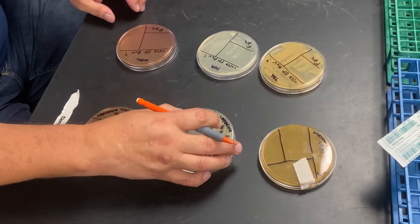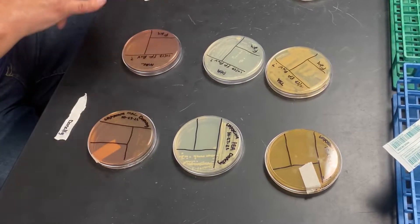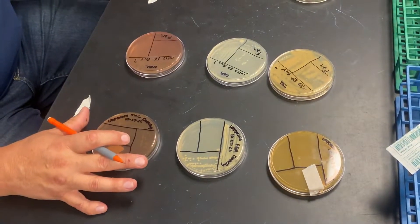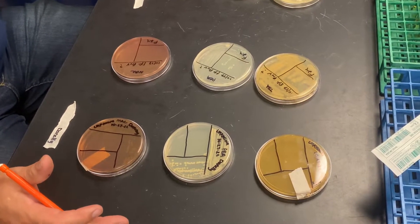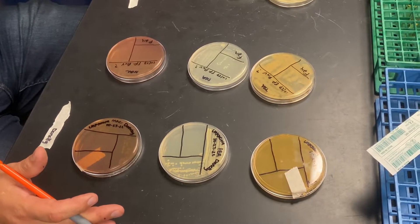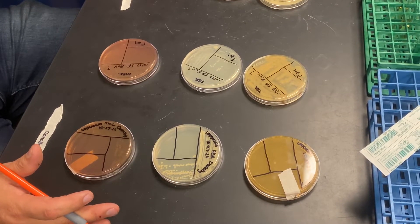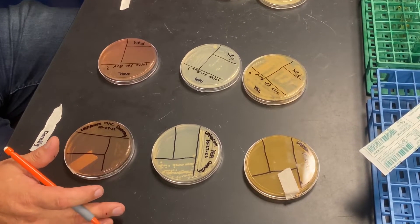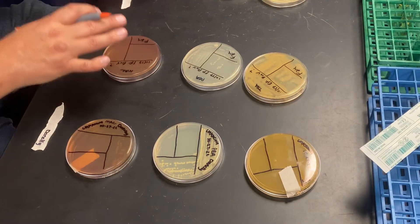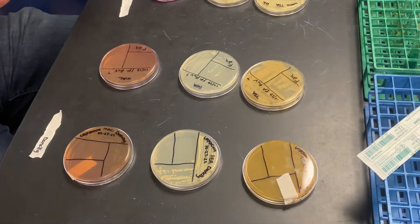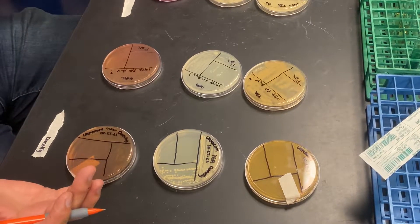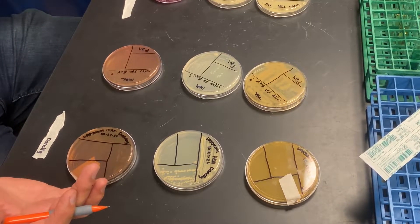Now the gram negatives are easy, right? They're growing on McConkie and you know they're gram negatives. So all you really have to do is put them into a battery of tests that we know as EMVIC. So everybody should put their gram negative from McConkie into EMVIC. But the gram-positives are a whole different ballgame. You're going to have to tell me what the morphology is before you can figure out how to identify it.